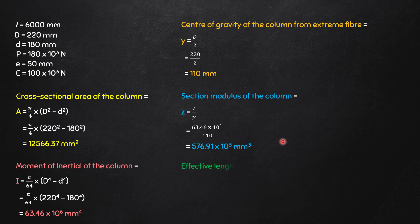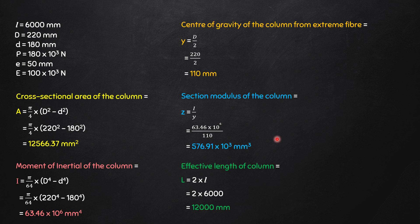Fifth, the effective length of the column, which depends on the end conditions. Here one end is fixed and the other is free, so the effective length capital L equals twice the actual length small l. Small l is 6000 mm, therefore capital L is 12000 mm. Just note that by changing the support conditions, the value of effective length can keep changing.